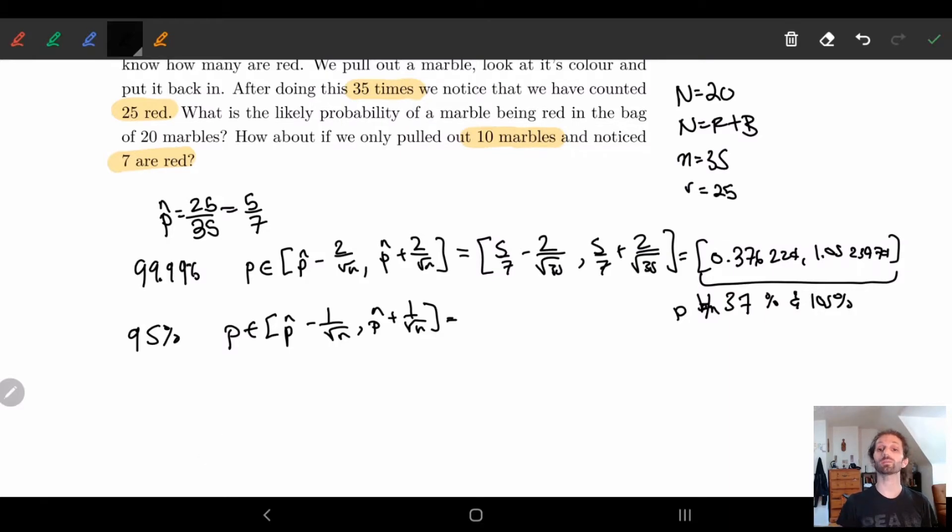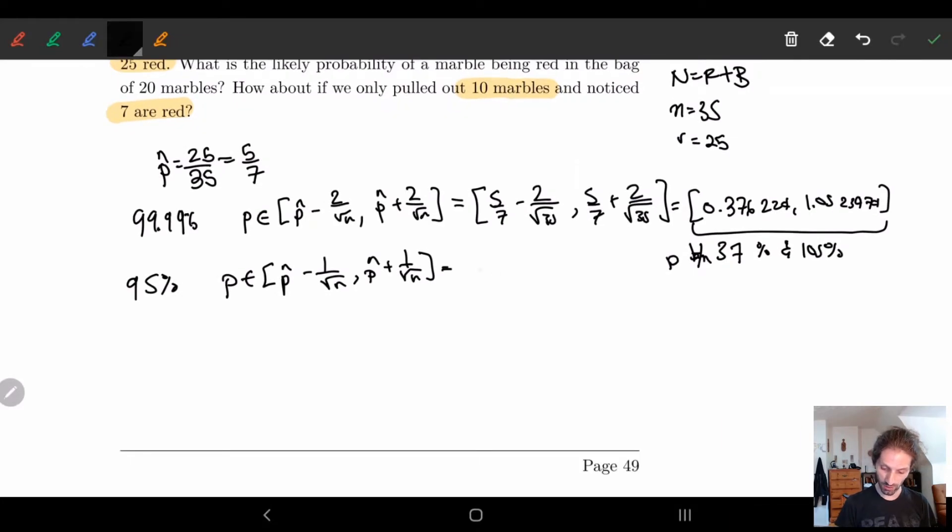So if you're not understanding where this is coming from, go back and try to figure out how this 95% interval is coming from. And if you have questions, just ask it in the Monday update.